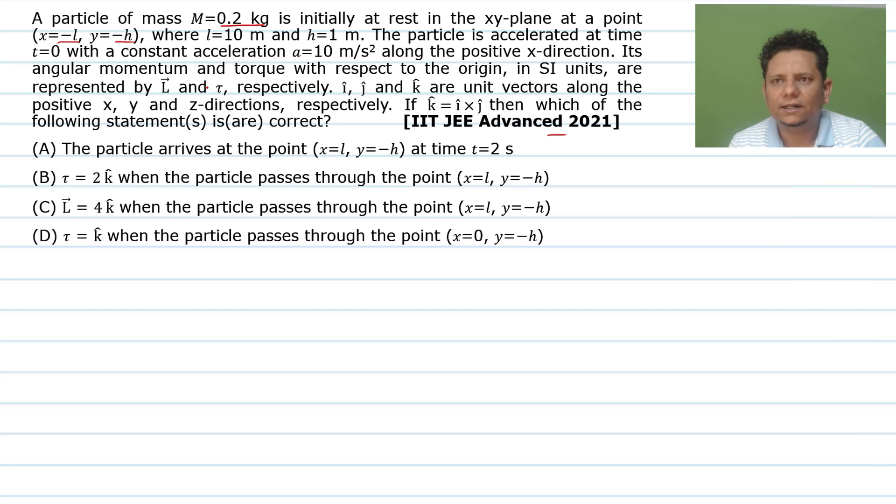Question says a particle of mass 0.2 kg is initially at rest in the xy plane at point (x=-l, y=-h), where l=10 meter and h=1 meter. The particle is accelerated at time t=0 with constant acceleration a=10 meter per second squared along the positive x direction.